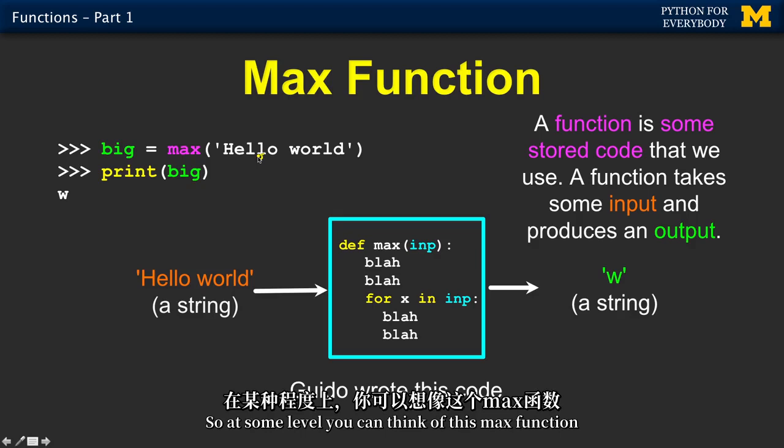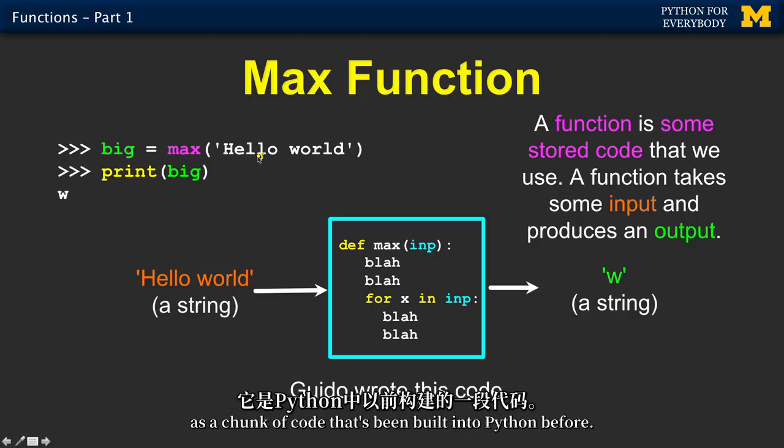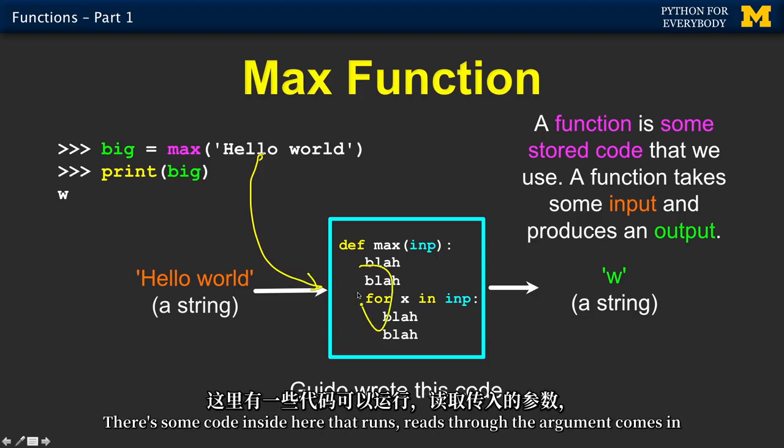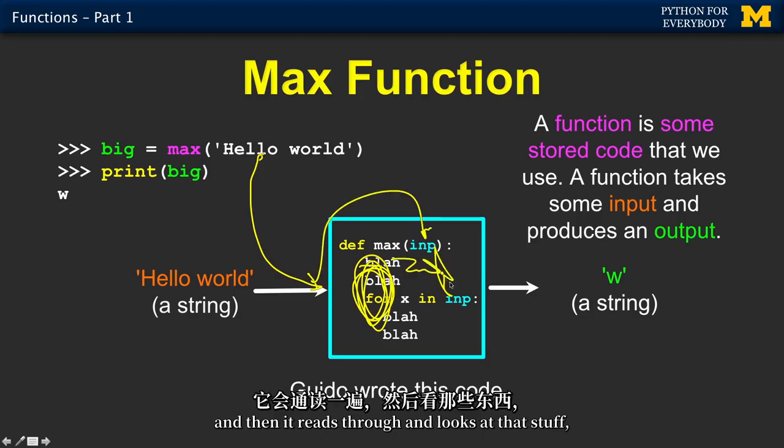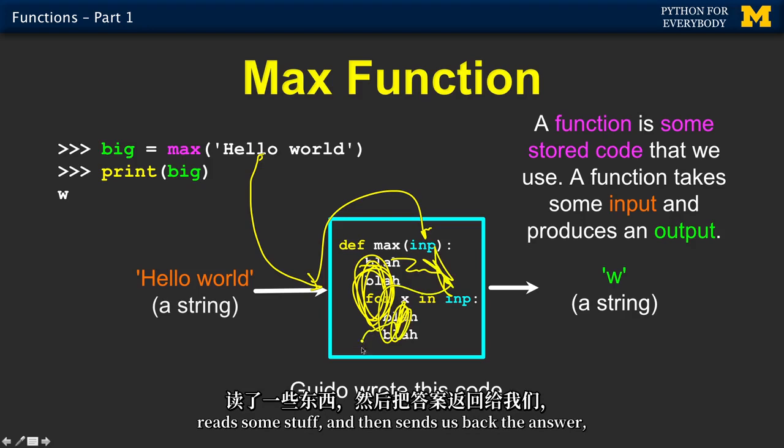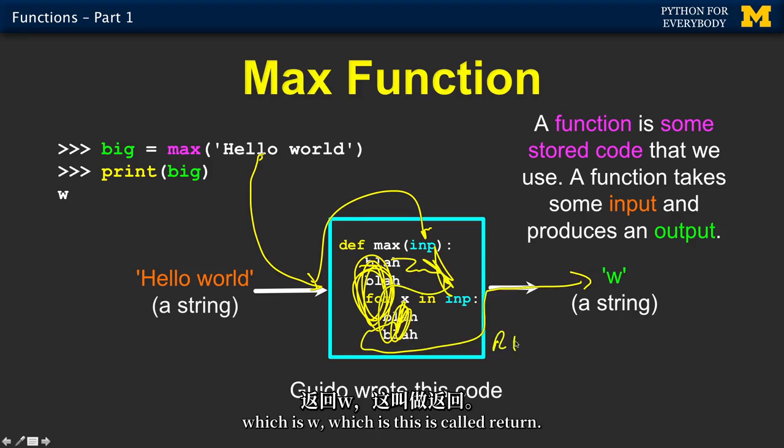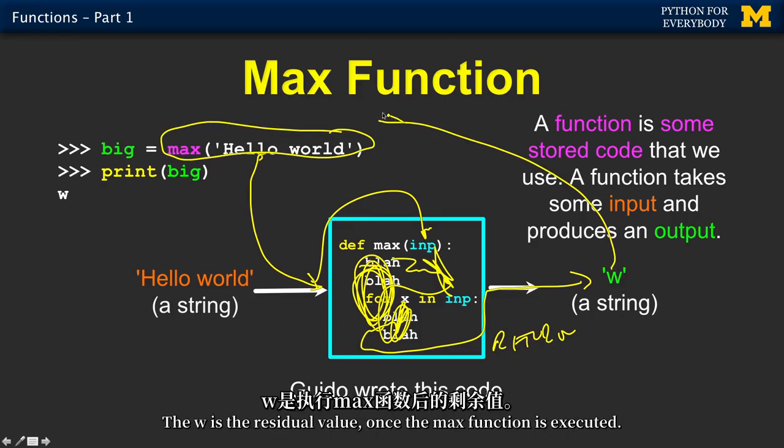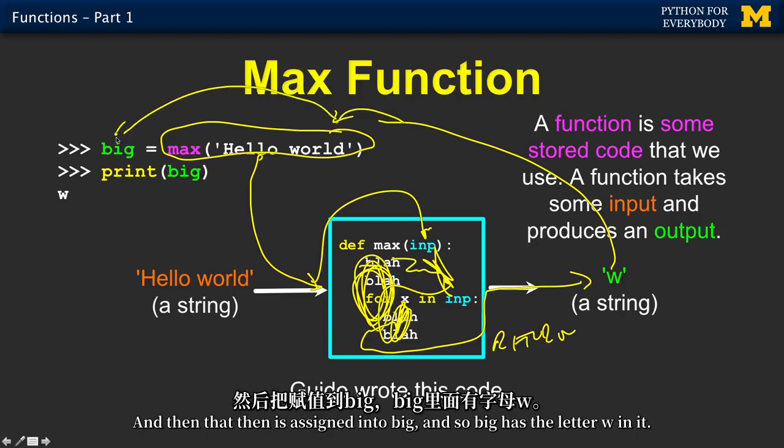So at some level, you can think of this max function as a chunk of code that's been built into Python before. We are passing in an argument, which is a string. There's some code inside here that runs, reads through the argument. It comes in. And then it reads through and looks at that stuff, reads some stuff. And then sends us back the answer, which is w. This is called return. It returns us something. And then that w, so you think it's working on this side of this assignment statement. The w is the residual value once the max function is executed. And then that then is assigned in to big. And so big has the letter w in it.